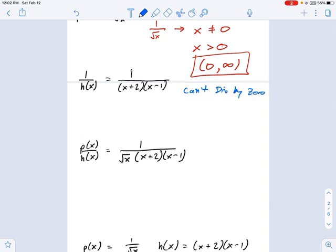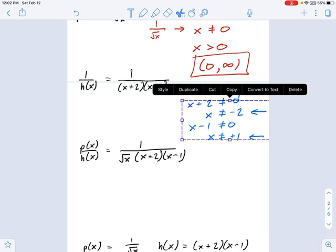So that means x plus 2 cannot be zero, which gives me x cannot be negative 2. It also tells me x minus 1 can't be zero, which gives me x cannot be positive 1. Those are our two domain restrictions, this guy right here and this guy right here. So the way we write that in interval notation is the following.